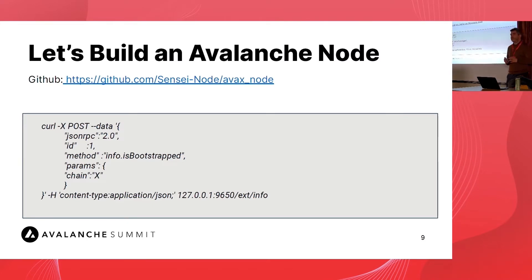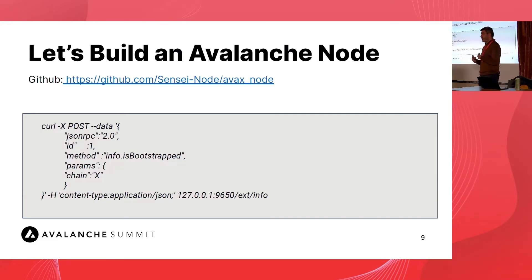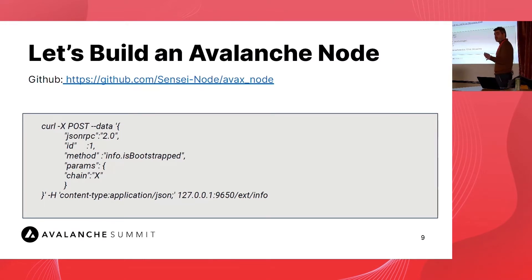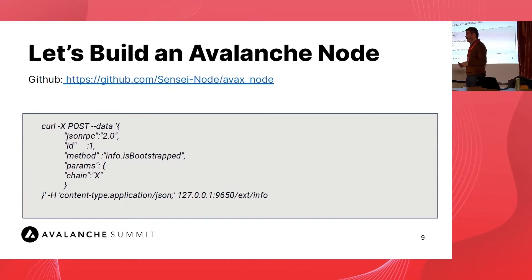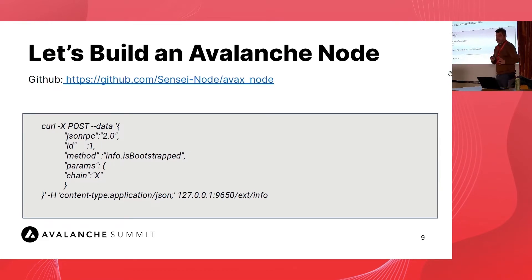The first thing needed before the node can be used is for it to be synchronized. Avalanche has three chains: the X-Chain, P-Chain, and C-Chain. You have to query all three chains to see if the node is synchronized and wait. For the Fuji testnet, depending on your machine and how fast it writes to disk, it will probably take one to two days to be synchronized. So at this point in the workshop, you wait — and come back to the GitHub to finish.